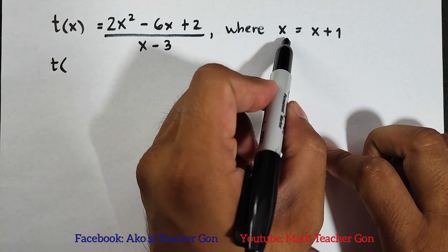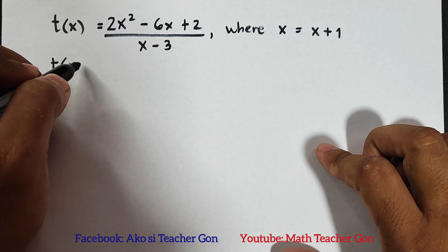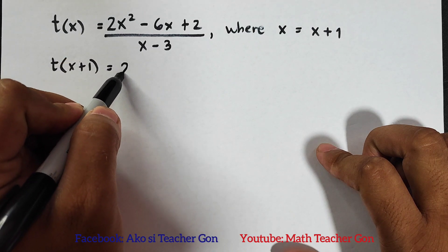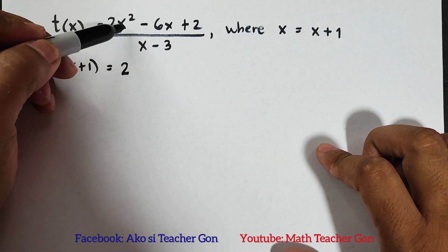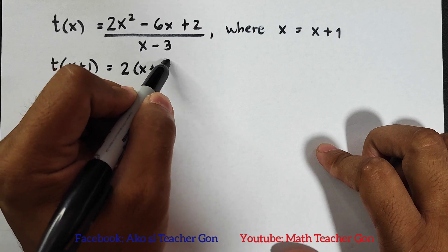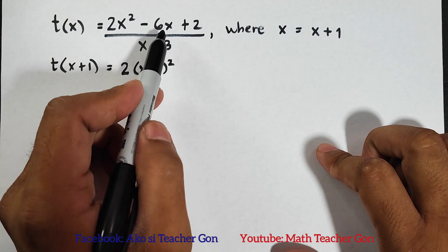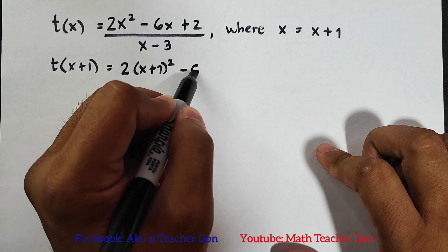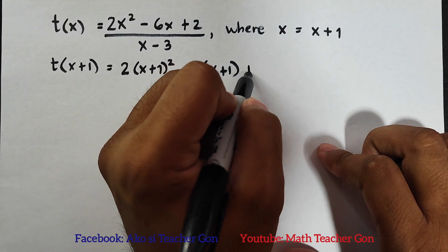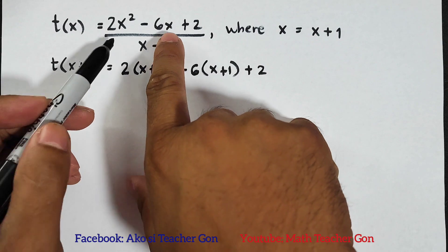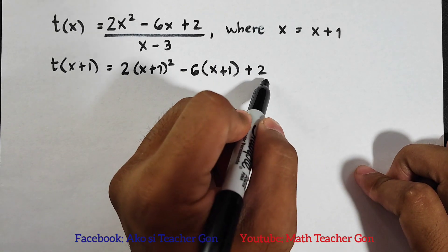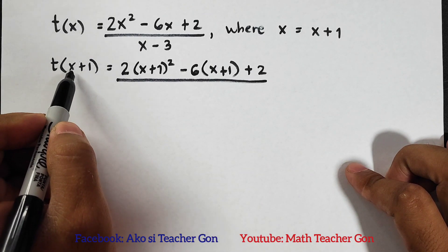Since your x is x plus one, this variable x will be replaced by x plus one throughout the entire expression. As you can see, we have x squared - this x will be replaced by x plus one, so this is (x+1) squared. Then for minus 6x here, minus six times x, your x will be replaced by x plus one. The pattern we are doing is that we are just replacing the variable x with x plus one, and then later on we will simplify it. For the denominator, this is x replaced by x plus one, then minus 3.